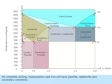On complete cooling, hypoeutectoid cast iron will have pearlite, ledeburite, and secondary cementite.